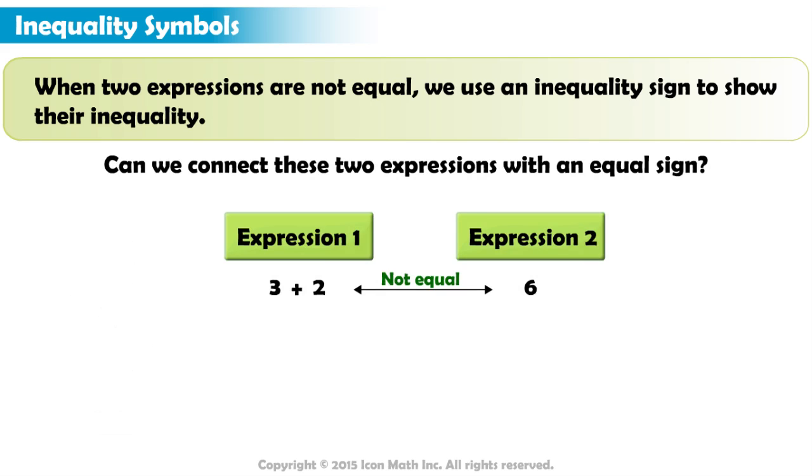In this example, 3 plus 2 equals 5, and 5 is smaller than 6. So, we place a less than symbol between the two expressions.